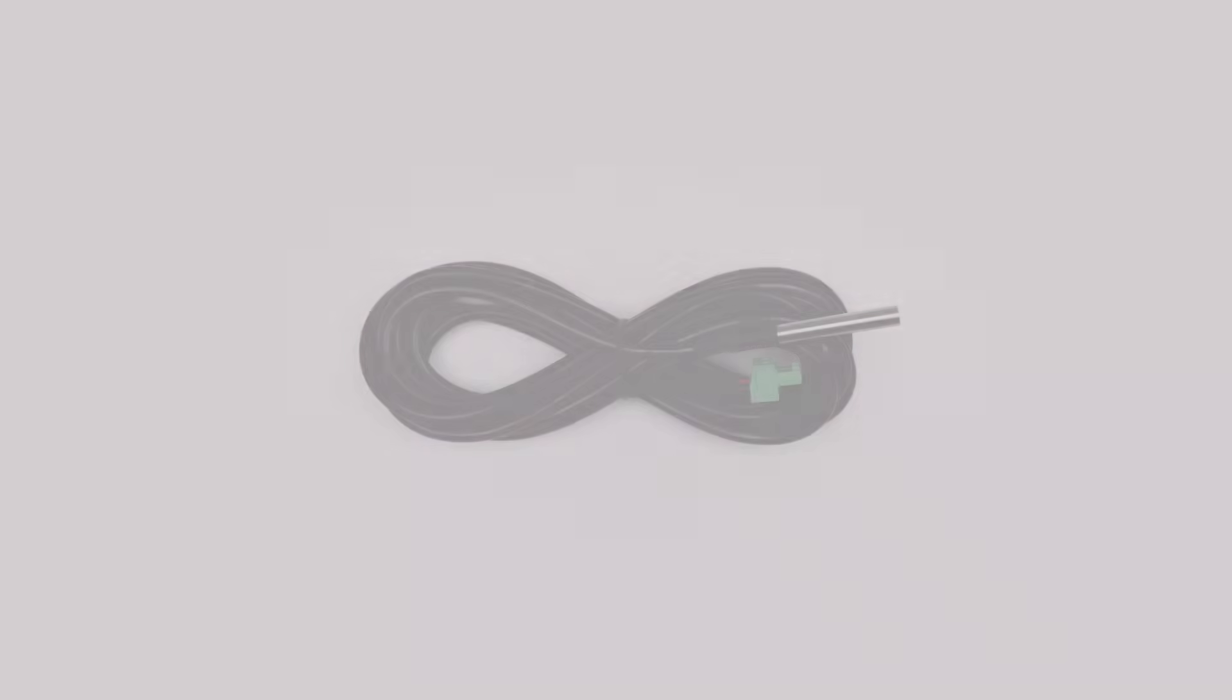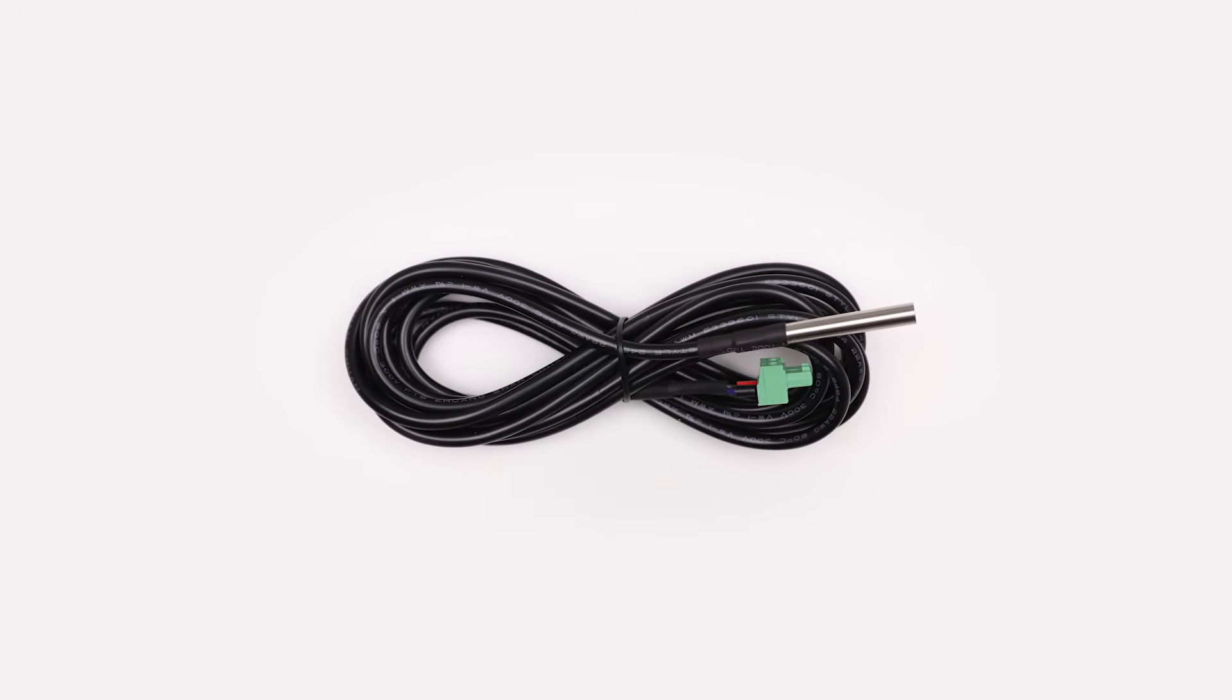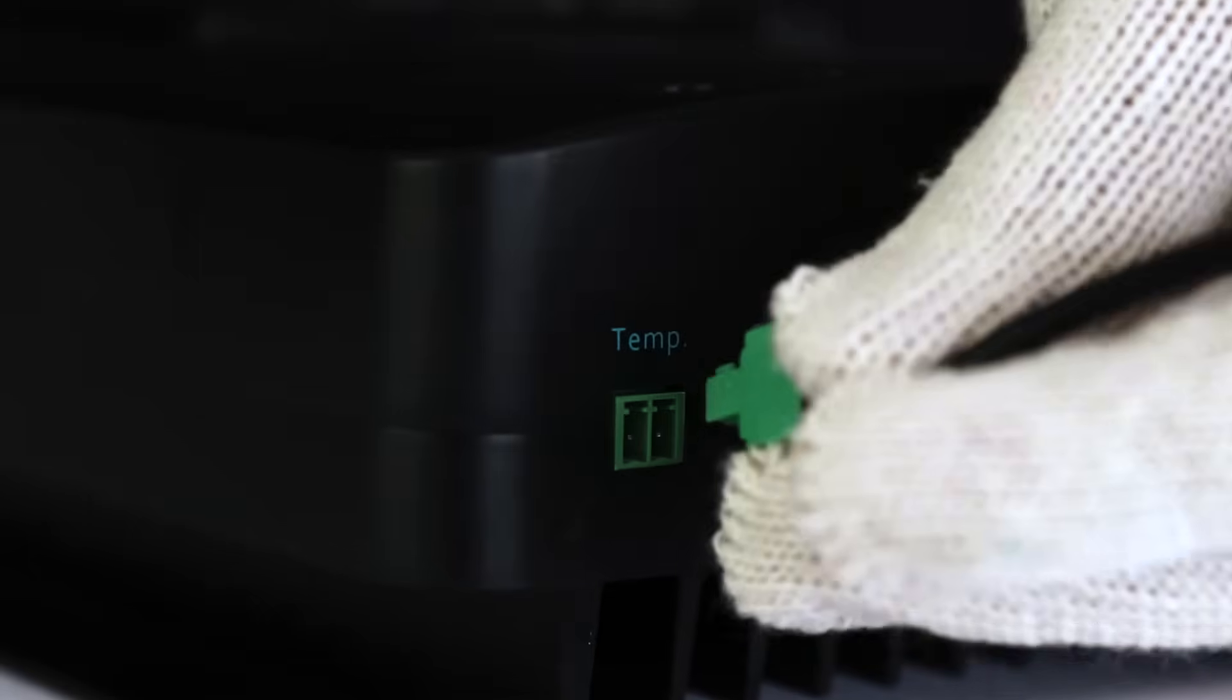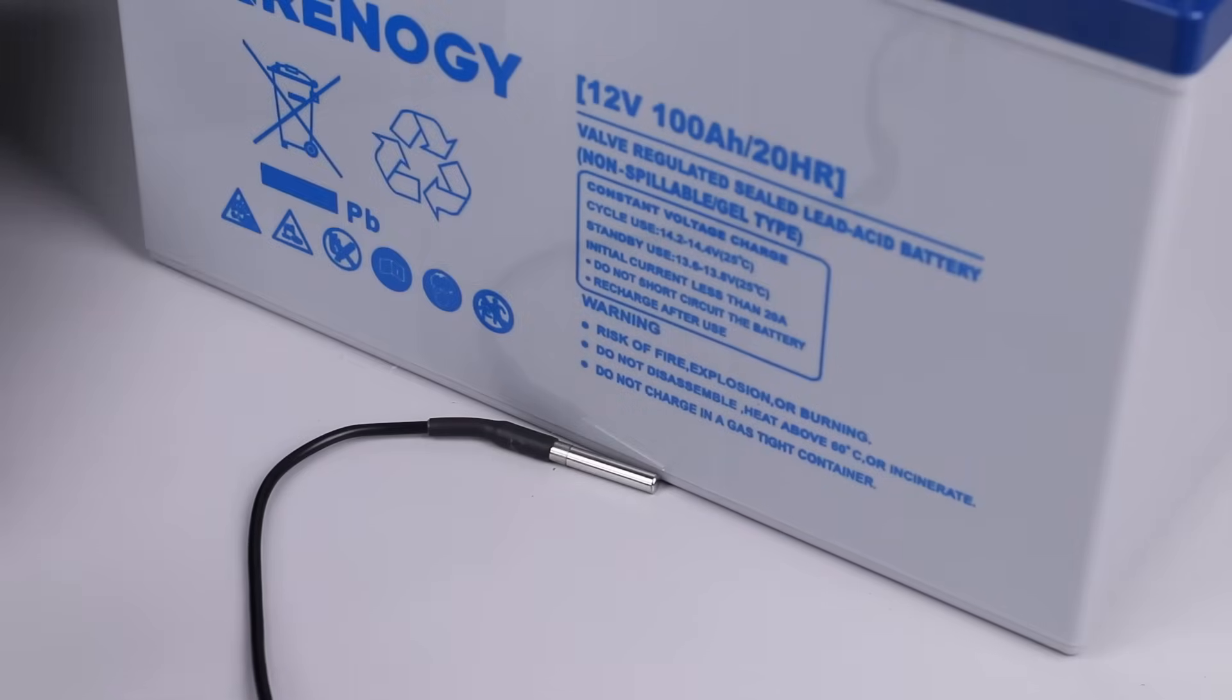The Rover will come with two additional components. The first is the remote temperature sensor. Connect this sensor to the labeled port on the controller, and then place the sensor inside the battery compartment. The sensor can also be taped to one side of the battery.